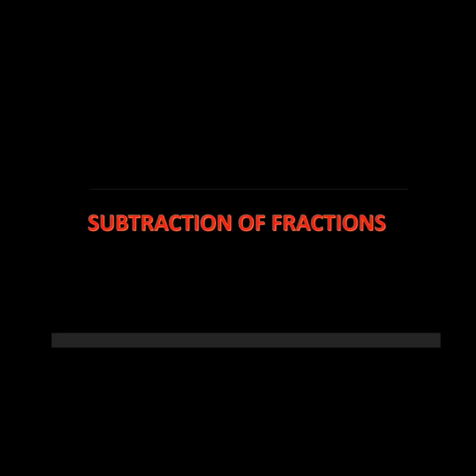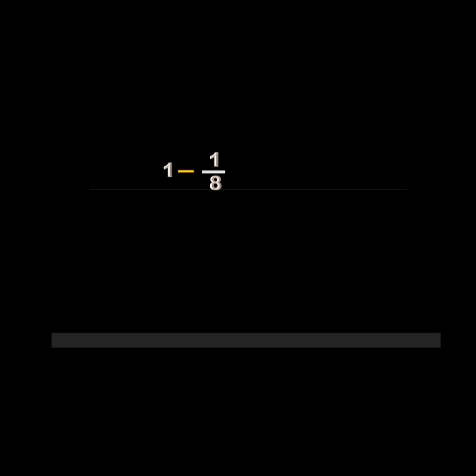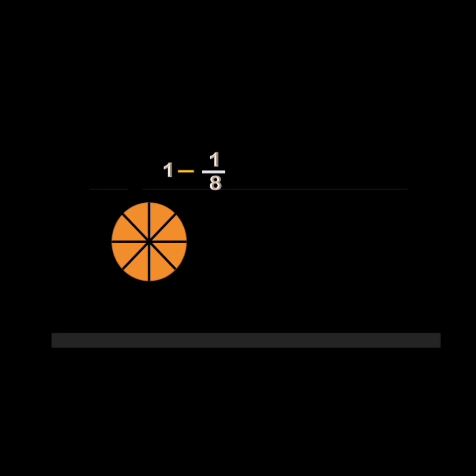Now subtraction of fractions. Similar to addition of fractions, we subtract by keeping the same denominator and just subtract the numerators. Let us take one example: 1 minus one eighth. One whole can be represented as 8 parts out of 8, which equals 8 upon 8. So 8 upon 8 minus one eighth — keeping the same denominator and subtracting the numerators — gives us 7 out of 8, which equals 7 by 8.